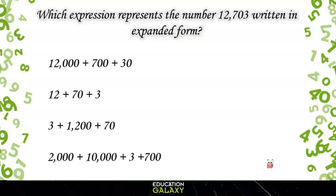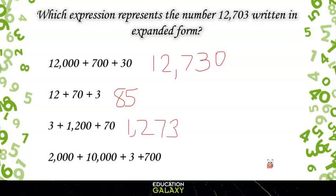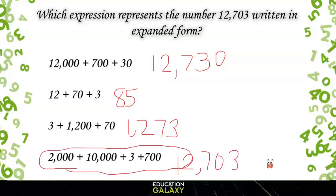Let's try one more problem. Which expression represents the number 12,703 written in expanded form? Let's check out the answer choices and see what each would give us. The first one would be 12,730. Then we have 12 plus 70, which is 82, plus 3 is 85. The next answer choice: starting with 1,200, adding 70 gives us 1,270, and adding 3 gives us 1,273. The last answer choice gives us 2,000 plus 10,000, which is 12,000. Then 3 ones and 700. That gives us 12,703, which is our answer.